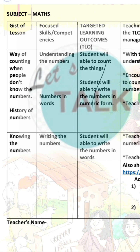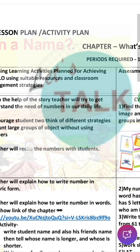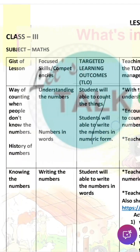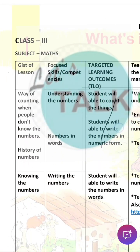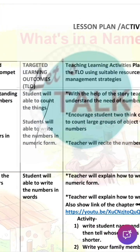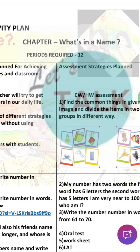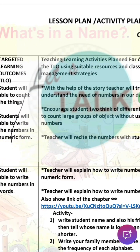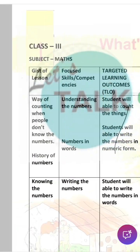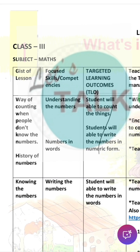You can see here the lesson plan and activity plan. Here we can write Class 3, subject Math, the chapter name, and how many periods are required. Next is the gist of lesson — the gist of lesson means what children are learning from the lesson.